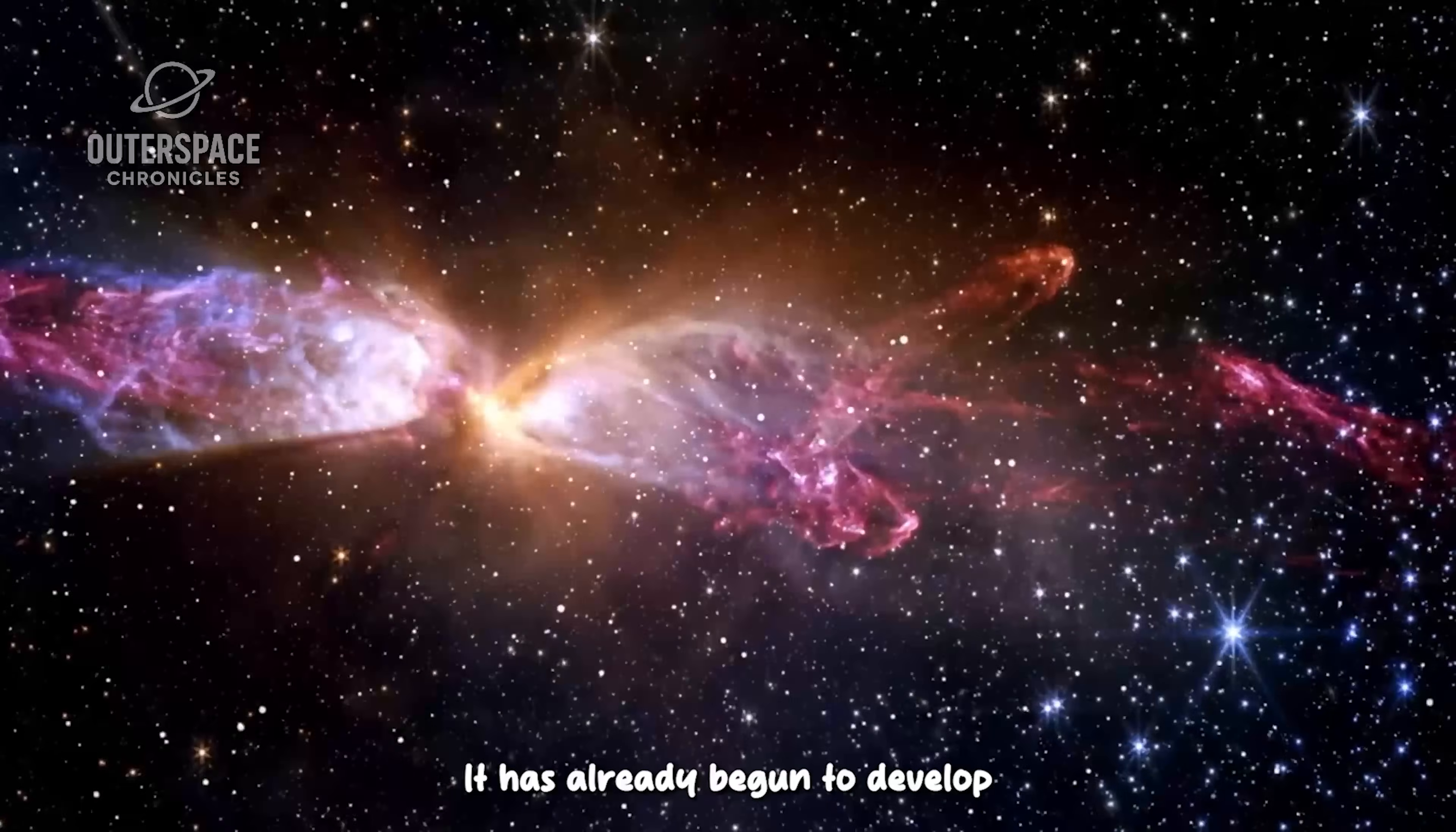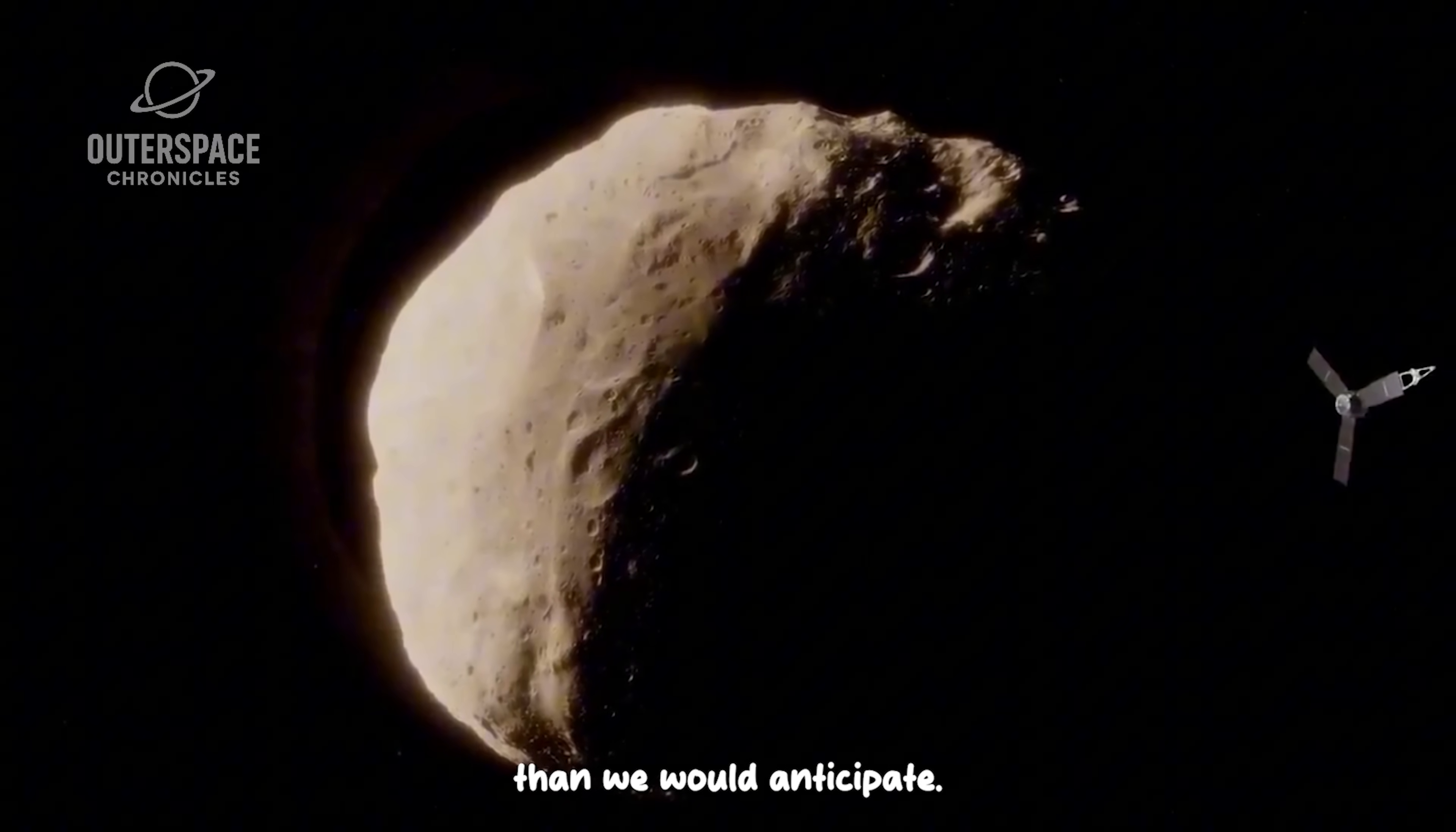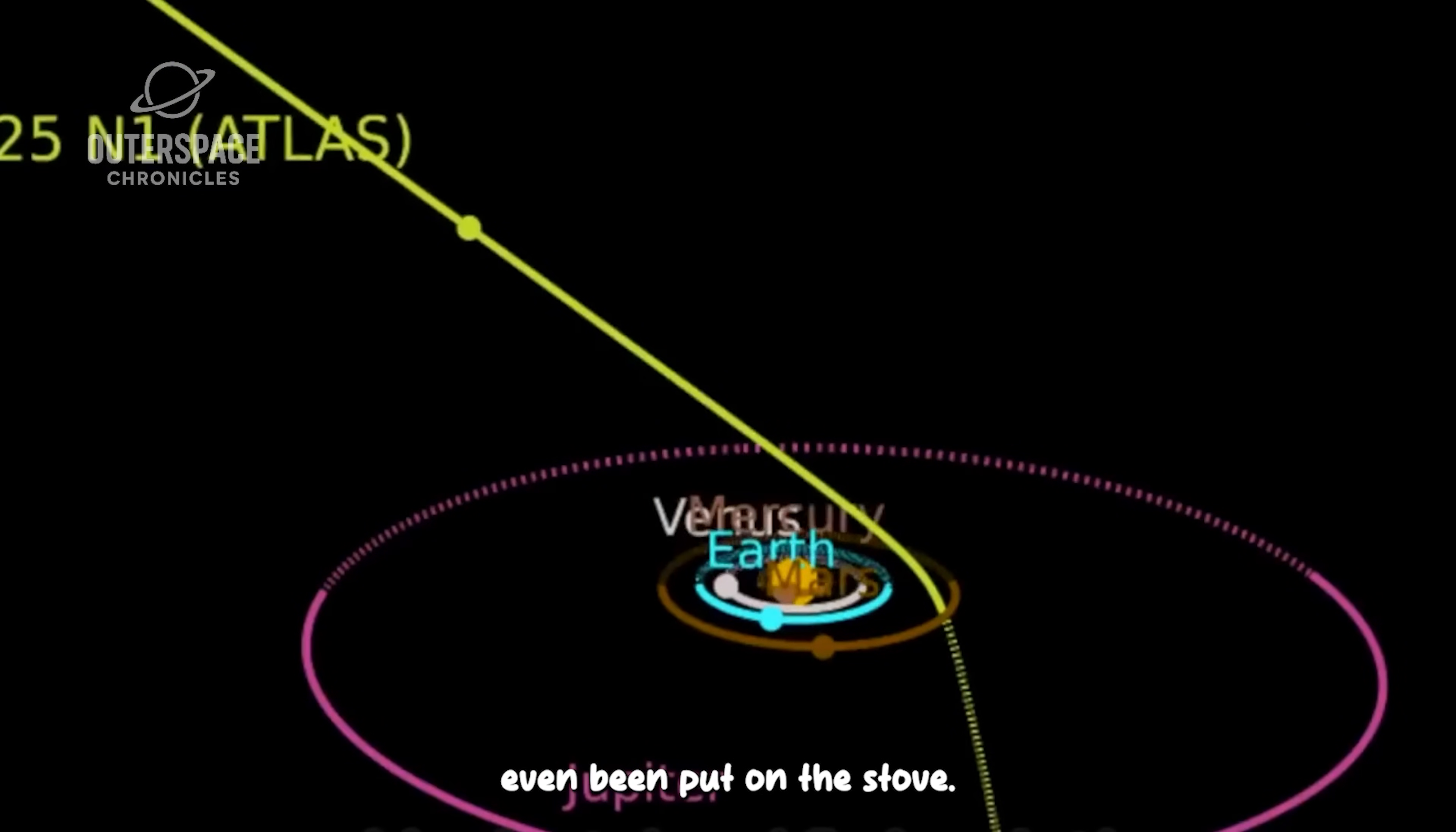It has already begun to develop a tail made of gas, a typical sign of a comet. What's unusual is that this tail appeared far earlier than we would anticipate, at a distance more than six times farther from the Sun than Jupiter, where the Sun is just a bright star in the night sky.